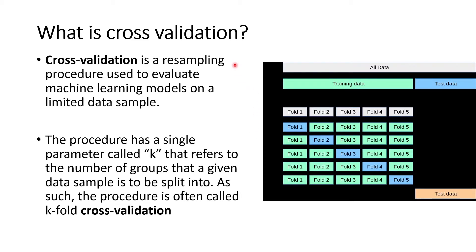But before we get into that, let me first explain what cross-validation is, because we come across this a lot. Cross-validation is a resampling procedure used to evaluate machine learning models on a limited data sample. For example, our data is going to be split into five different sets. The first set is used as the test data and the rest as the training data. On the second iteration, the second set will be used as the test data and everything else as the training data. The model runs again a third time with the third set as the test.